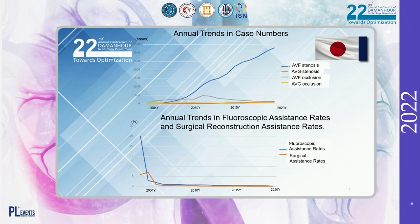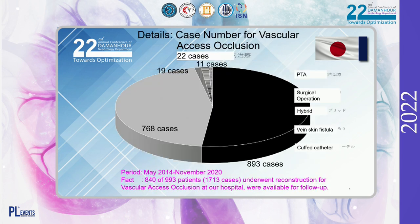This slide shows the number of cases, fluoroscopy assistance rate, and surgical reconstruction assistance rate over time. The fluoroscopy assistance rate and surgical reconstruction assistance rate have progressively increased with the increase in number of cases. 840 patients and 1,730 events were enrolled among 993 patients undergoing treatment at the hospital for vascular access occlusion between May 2014 and November 2020.